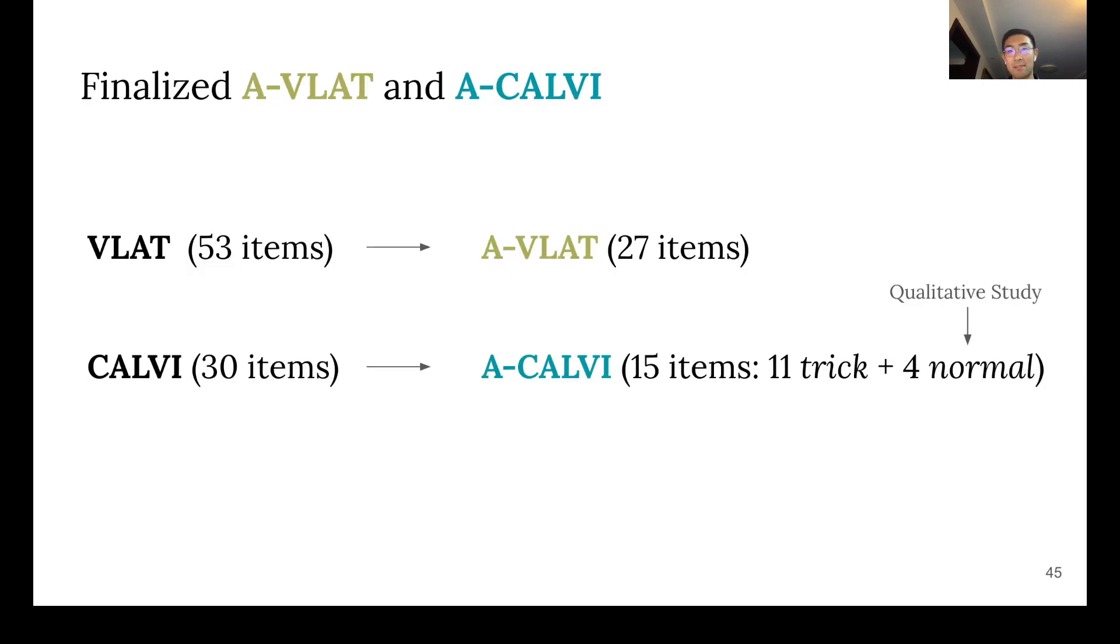In the end, we halved VLAT and CALVI using adaptive testing. A-VLAT has 27 items, and A-CALVI has 15. It's worth mentioning that we also run a qualitative study that reduced the number of normal items in A-CALVI to just 4. Please read our paper for more detail.